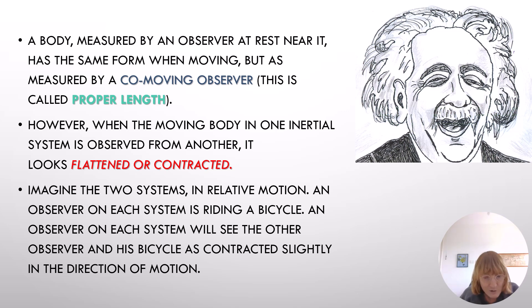However, when the moving body in one inertial system is observed from another, it looks flattened or contracted. Imagine two systems in relative motion. An observer on each system is riding a bicycle. An observer on each system will see the other observer and his bicycle as contracted slightly in the direction of motion.